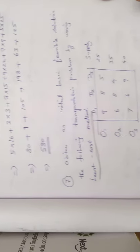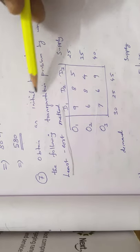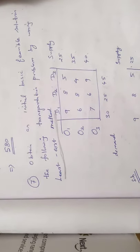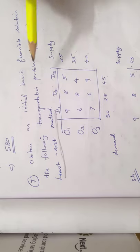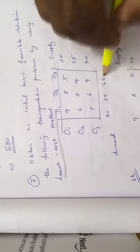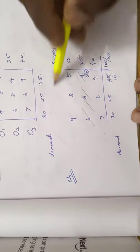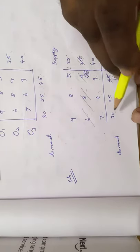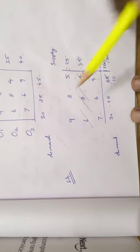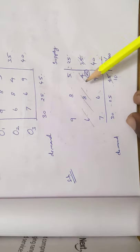Next, problem number 7: obtain an initial basic feasible solution for the following transportation problem using the Least Cost Method. Three origins and three destinations are given. Supply values are 25, 35, 40 and demand values are 30, 25, 45.